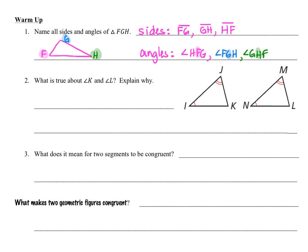Question number two says, what is true about angle K and angle L? And explain why. So we notice we have two different triangles, triangle IJK and triangle NML. We see arc marks in angle I and angle N. We have one arc mark in angle J and angle M. We have two arc marks, and we remember, because of the third angle theorem, that that means that angle K and angle L have to be congruent to one another.